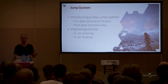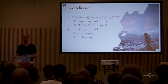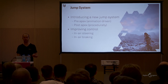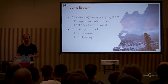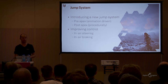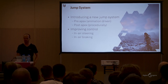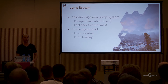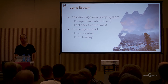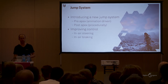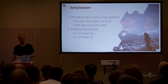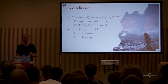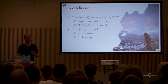Before continuing with traversal mechanics that use these annotations, I'd first like to describe how we set up our jump system, because attaching to an annotation often happens from a jump. In Horizon, our jump trajectory is split into two phases: a pre-apex phase, which is animation-driven, and a post-apex phase, which is code-driven. A problem with animation-driven movement is that it takes away control from the player. Therefore, we added in-air steering — during the complete take-off and falling phase we allow adjustments on the orientation of Aloy, which results in bending the trajectory. By applying dampening on the forward momentum when the player lets go of the movement stick, we simulate in-air braking.